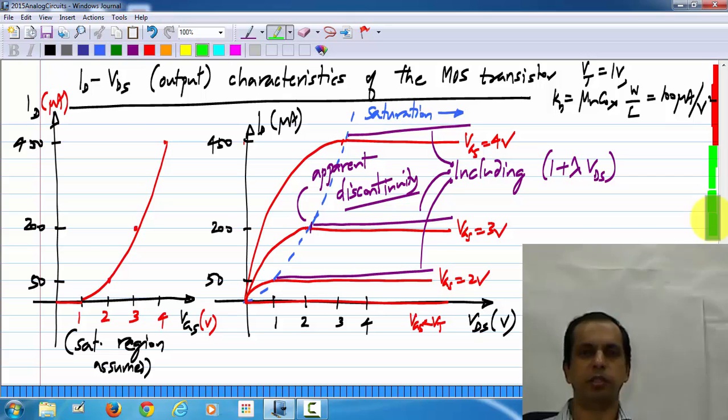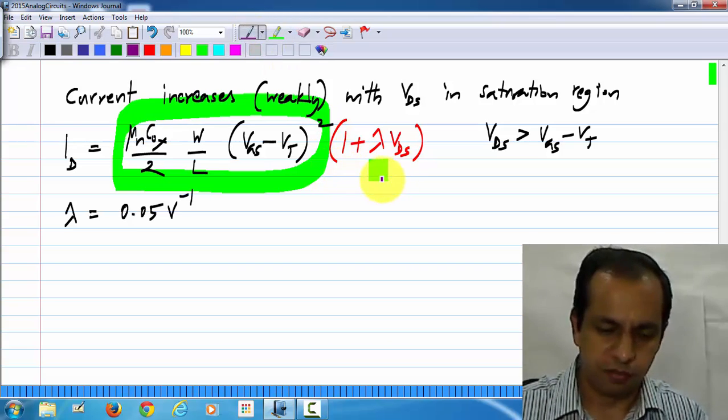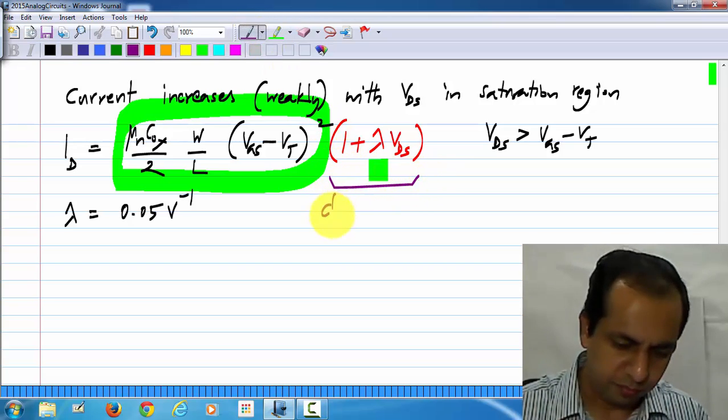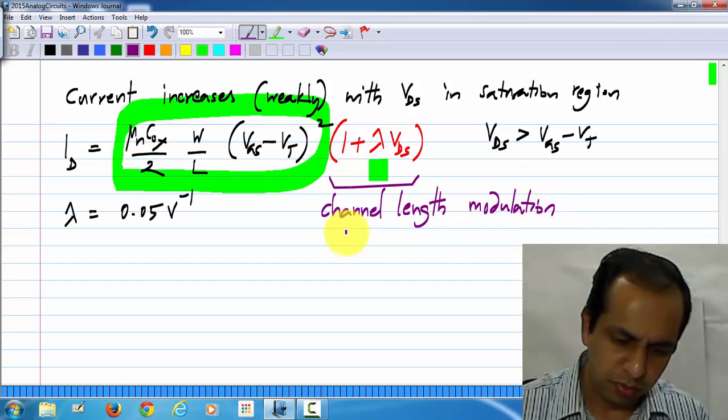So, do not worry about this discontinuity. It is not going to be there in the real MOS transistor, but we will use these models which do appear like they have a discontinuity without any problems, because the purpose of hand calculation is to get an idea of what is happening. To get the exact answer, we will use the sophisticated model in a computer simulator, and that usually has hundreds of different parameters.